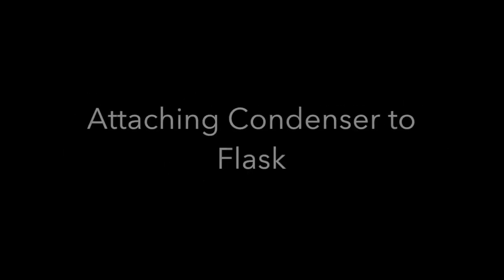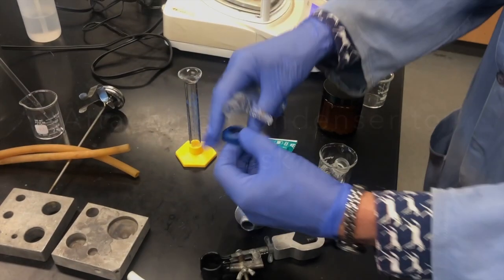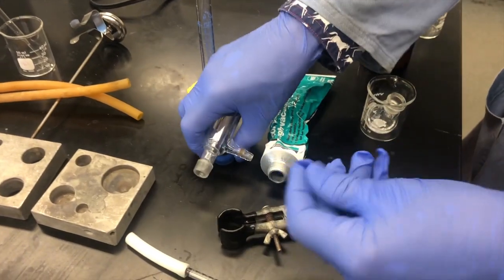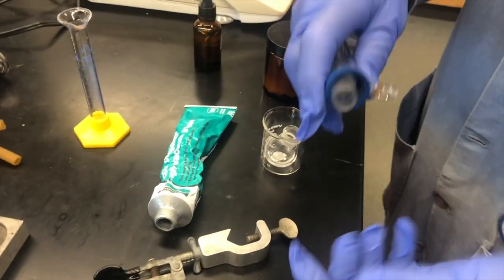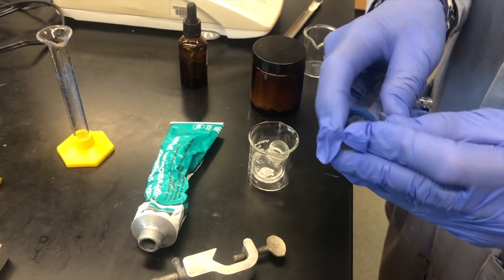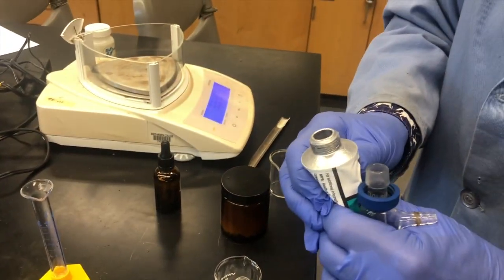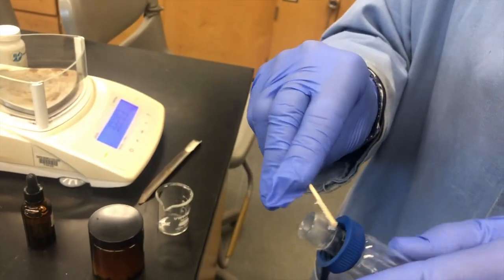Next, it's time to attach the condenser to the flask. At this stage, we are going to attach two pieces of ground glass together and make sure that they form a nice seal.